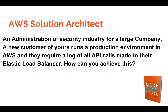Today's question: an administrator of a security industry for a large company — a new customer of yours — runs a production environment in AWS, and they require a log of all API calls made to their Elastic Load Balancer. How can you achieve this? The question is how to record the API calls made to the Elastic Load Balancer in a production environment.